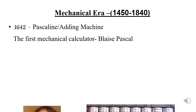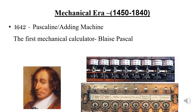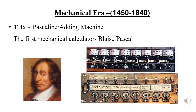Several important events happened in the mechanical era. One of them was the invention of the Pascaline, or adding machine, by a scientist named Blaise Pascal in 1642. This Pascaline machine is known as the world's first mechanical calculator. Only addition and subtraction of two digits was possible with this device.